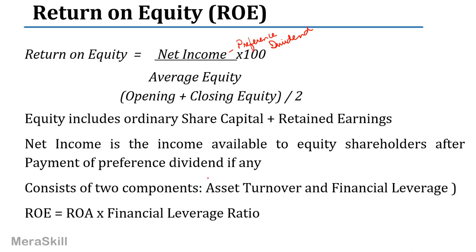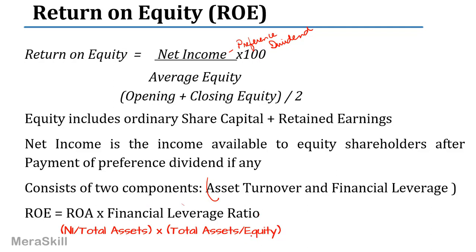Return on equity also consists of two components: the asset turnover and the financial leverage ratio. So ROE equals ROA multiplied by the financial leverage ratio. ROA is net income by total assets, and the financial leverage ratio is total assets divided by equity. It is important to remember this breakup because sometimes questions give only this kind of information and you need to figure out return on equity.